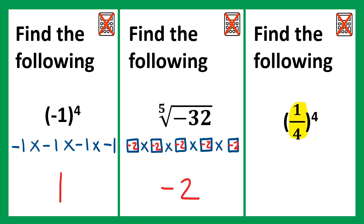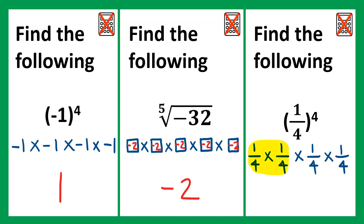Lastly, we have 1 quarter to the power of 4. This would be the same as 1 quarter times 1 quarter times 1 quarter times 1 quarter. 1 quarter times 1 quarter is 1 sixteenth; multiply by 1 quarter again is 1 over 64; and times by 1 quarter again would be 1 over 256.